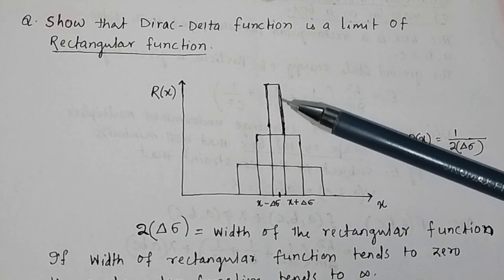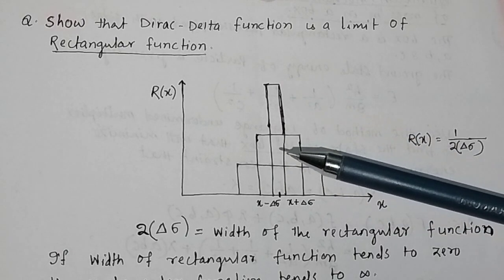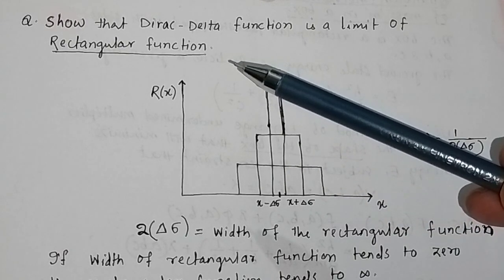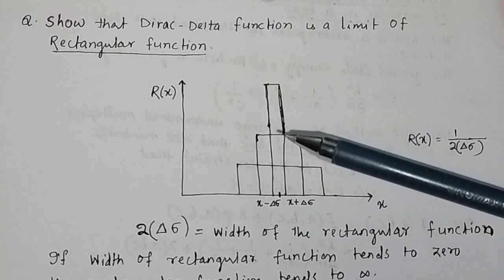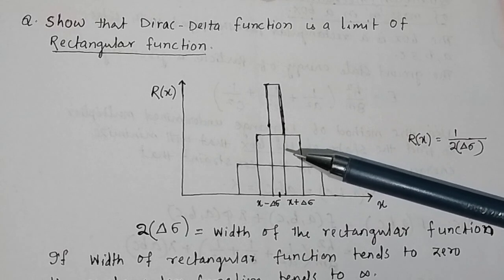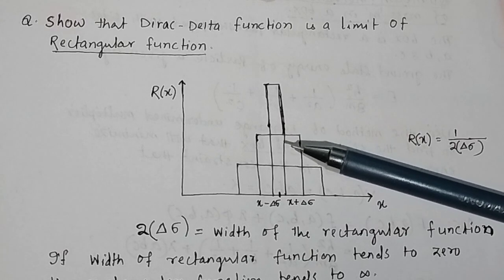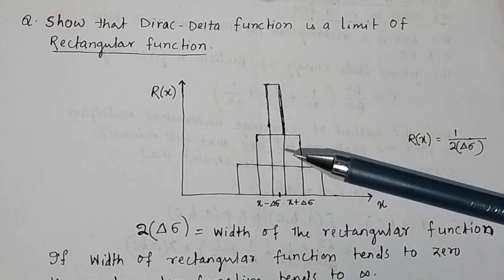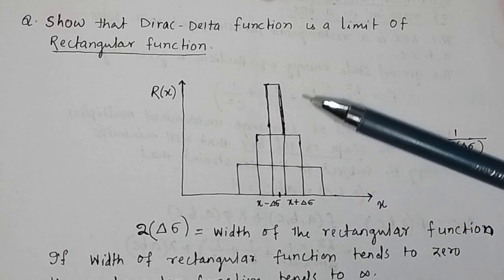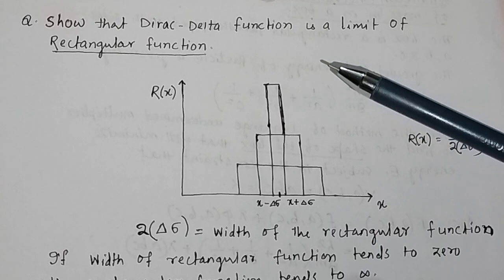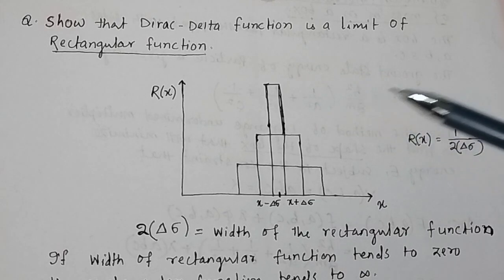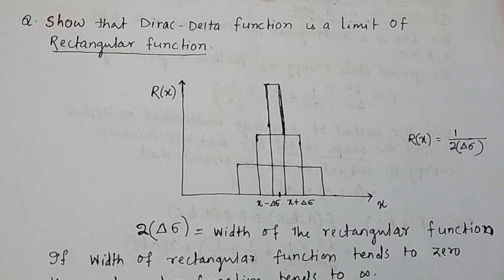Only in the case of a rectangular pulse can the rectangular function be defined as a Dirac delta function. In this problem, we will show how the limit of a rectangular function can be treated as a Dirac delta function.